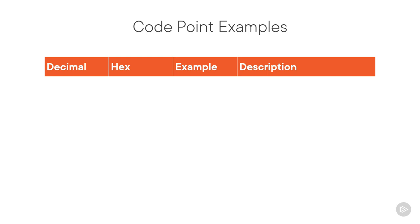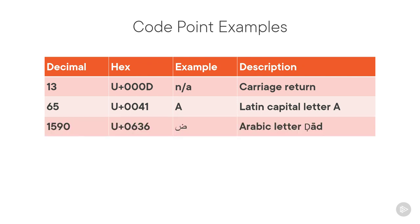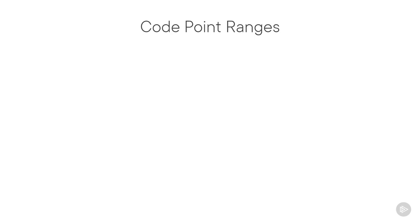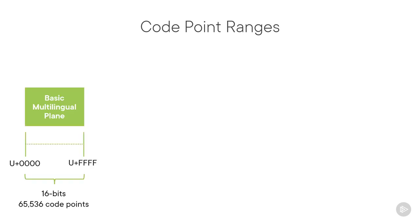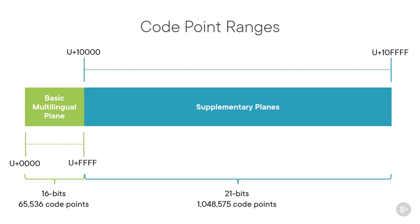Here are a few examples of Unicode code points. Code point 13, or 000D in hexadecimal, is a non-printing control character representing a carriage return. Code point 65 is the Latin capital letter A. Code point 1590 represents an Arabic letter. Code point 128,512 represents the grinning face emoji. Within Unicode code points, there are two sub-ranges. The Basic Multilingual Plane includes code points from 0 to 65,536, which are representable with a single 16-bit value, and is sufficient to cover most of the world's writing systems. Supplementary Planes provide support for more than a million additional code points, supporting characters from less common and ancient scripts as well as the emoji characters.